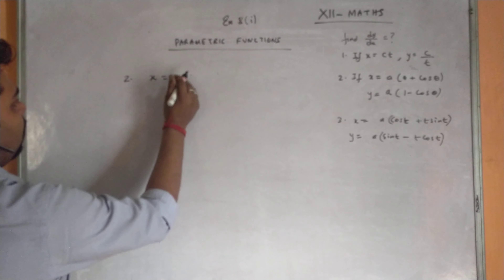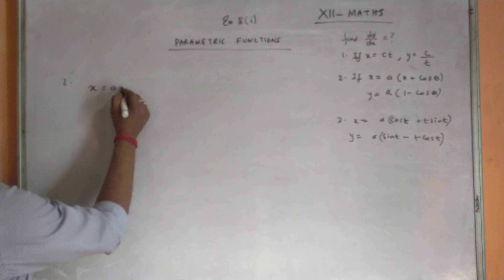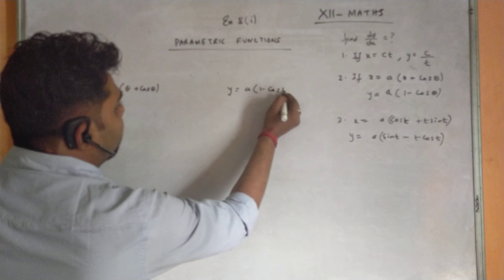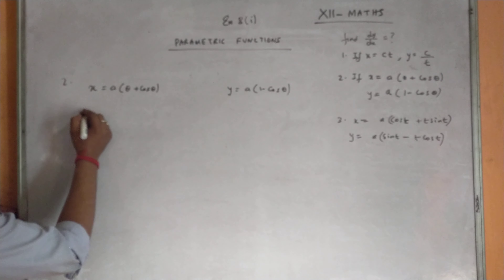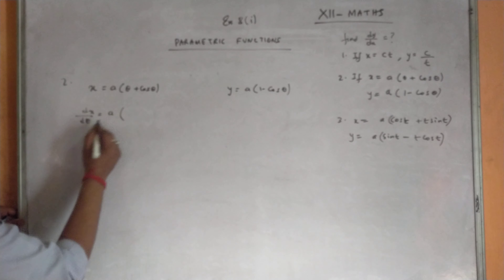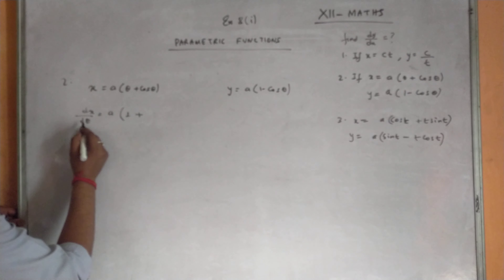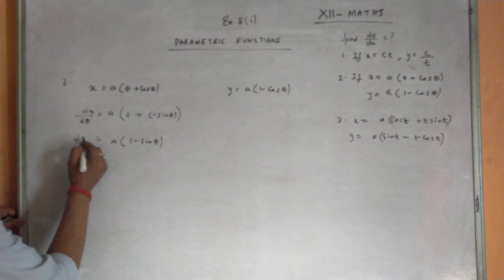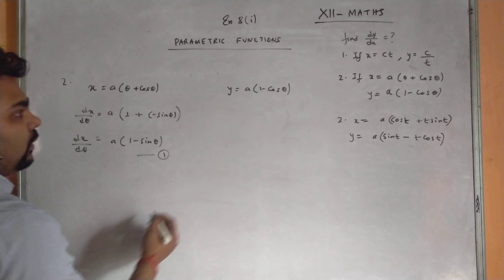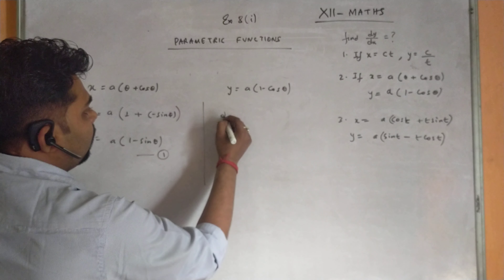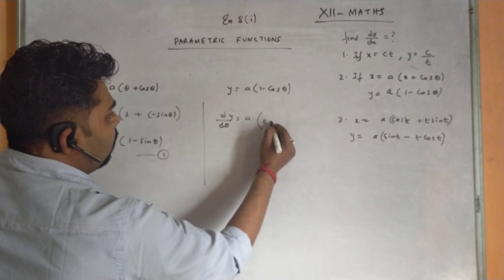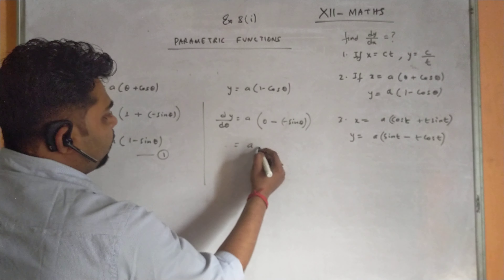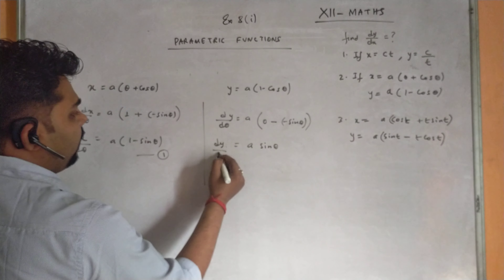Next parametric question: x = a(θ + cos θ) and y = a(1 - cos θ). Differentiating x with respect to θ: dx/dθ = a·(1 + (-sin θ)) = a(1 - sin θ) — equation 1. Differentiating y with respect to θ: dy/dθ = a·(0 - (-sin θ)) = a·sin θ — equation 2.